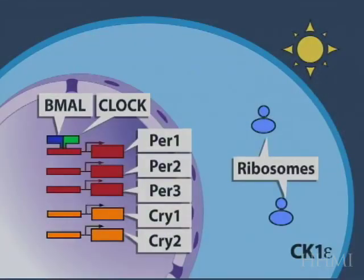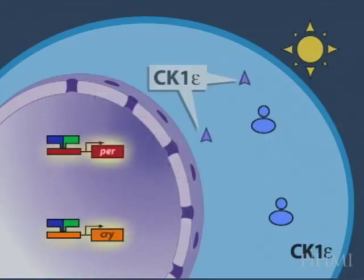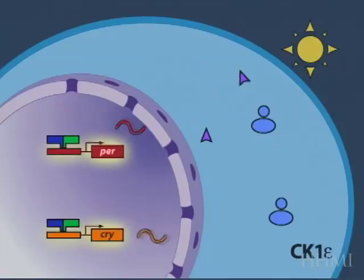In the next animation, we're just going to add casein kinase 1 here as a new member of this CLOCK gene family. As we saw before, we have CLOCK and BMAL regulating PER and cryptochrome and casein kinase 1.